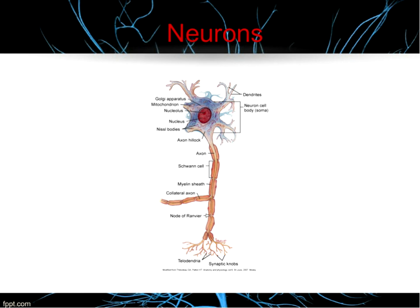The nervous system has two types of cells: neurons and glial cells. We'll talk about glial cells in another slide. Right now we're just going to talk about neurons. Think of a neuron as the nerve cell of the nervous system. I also want you to think about neurons as one-way streets — impulses can only move one way on any particular neuron.